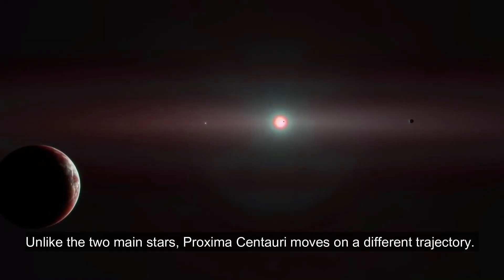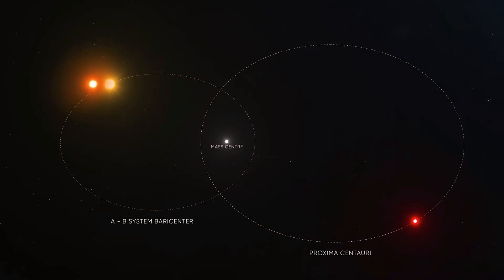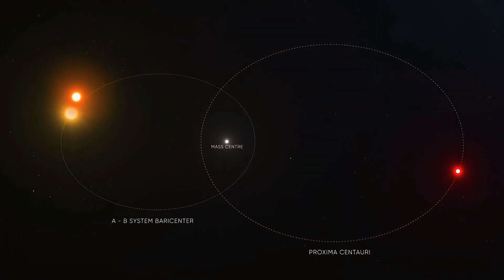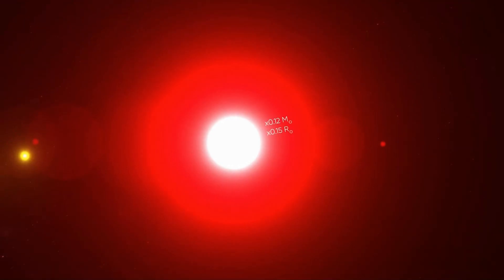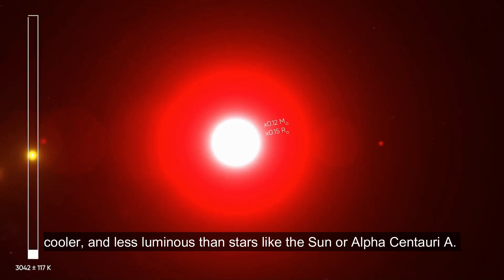Unlike the two main stars, Proxima Centauri moves on a different trajectory. Proxima Centauri is a red dwarf star that is smaller, cooler, and less luminous than stars like the Sun or Alpha Centauri A.